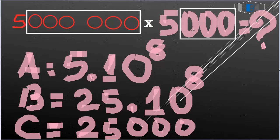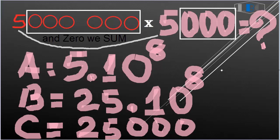The next step is we calculate only the numbers, we calculate only numbers. What does that mean? It means we calculate five with five, and we count the zeros separately.